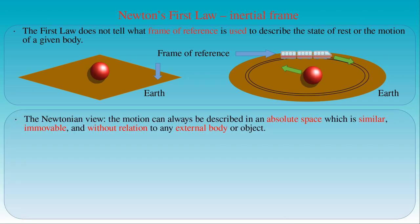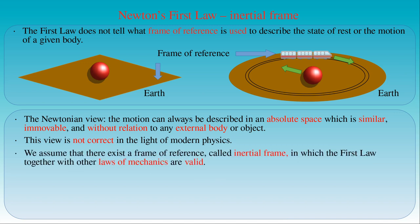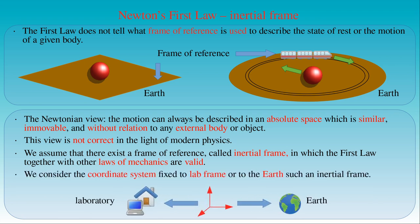In Newton's view, motion can always be described in an absolute space, which is similar, immovable, and without relation to any external body or object. His view was proved to be incorrect in the light of modern physics. Nevertheless, in classical mechanics we can assume that there exists a frame of reference — called the inertial frame — in which the first law of motion together with other laws of mechanics are valid. We consider a coordinate system fixed to the lab frame or the earth such an inertial frame, at least approximately.